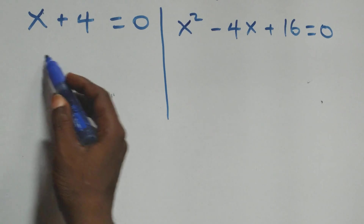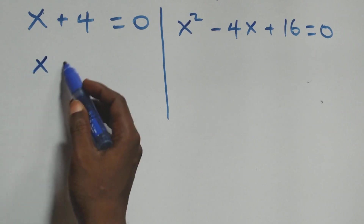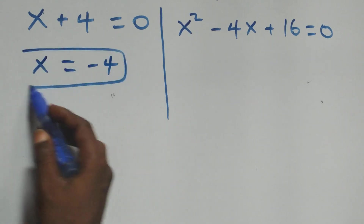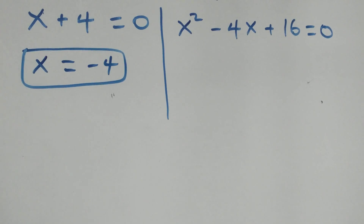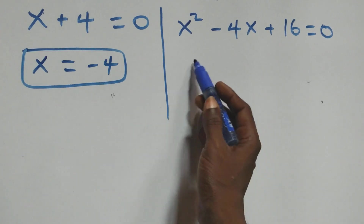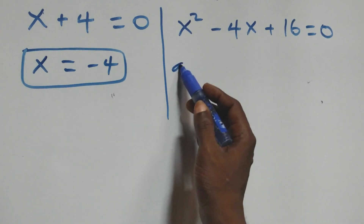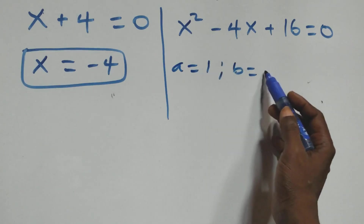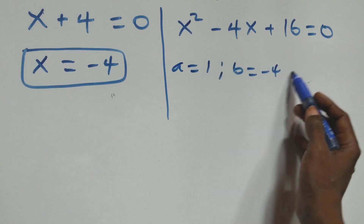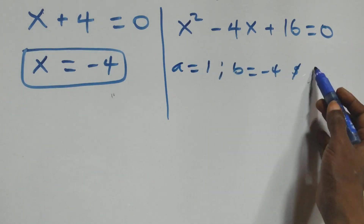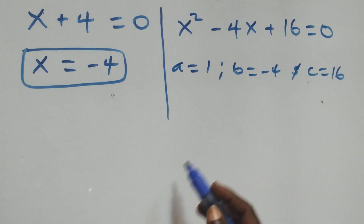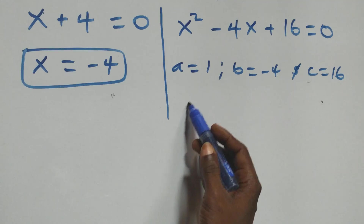Solving on this side, we have x equals to minus four, which is a real solution. Then here we have a quadratic equation where a equals to one, b equals to minus four, and c equals to sixteen. Now applying the quadratic formula.